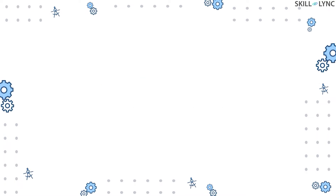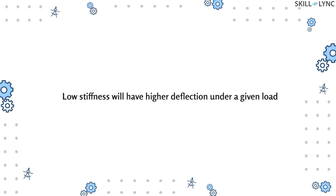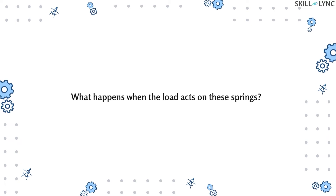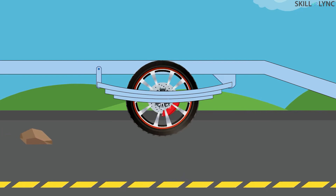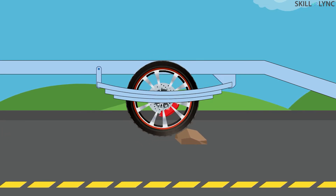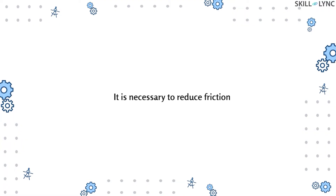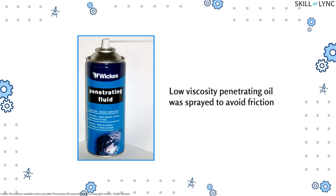To obtain a smooth ride, a low stiffness rate is required, which results in higher deflection under a given load. As the load acts, the leaves slide over each other and friction between the interface occurs. This leads to a hard ride, creating unnecessary noise and wear of the spring components. Hence it is necessary to reduce friction as much as possible.